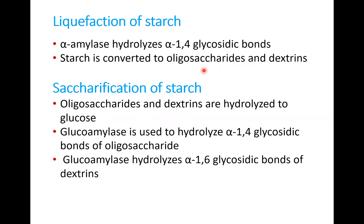In the first step — liquefaction — we use alpha amylase. In the second step — saccharification — we use glucoamylase. Glucoamylase is used to hydrolyze the alpha-1,4 glycosidic bonds of oligosaccharides, and it is also able to hydrolyze the alpha-1,6 glycosidic bond of dextrin.